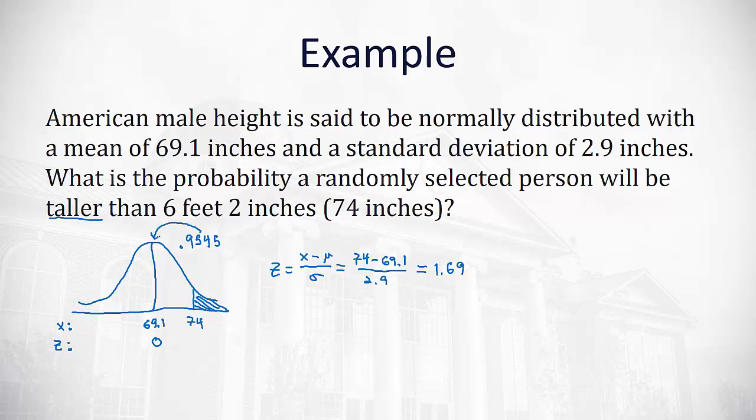But remember, that area is always the area to the left, and we want the shaded area to the right. Well, that's just the complement, so we'll take 1 minus 0.9545. When we subtract, we get 0.0455.